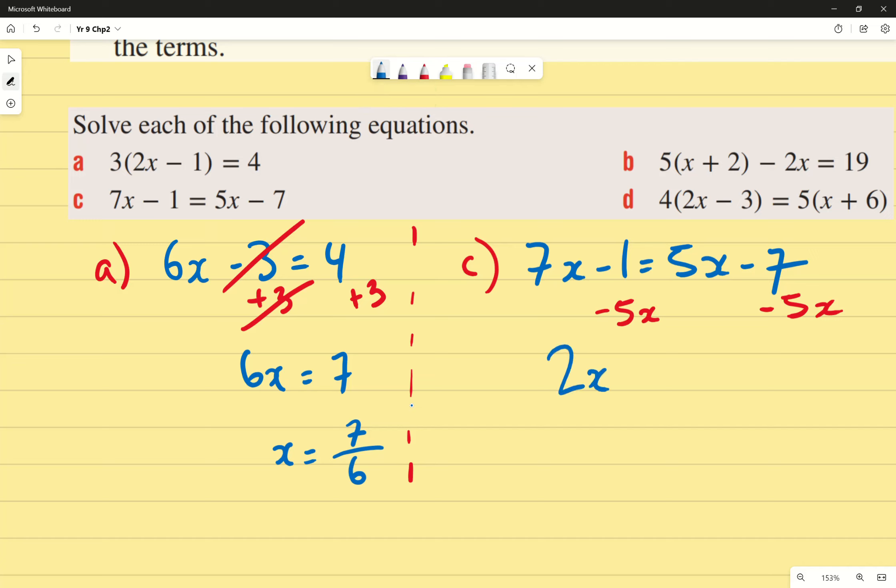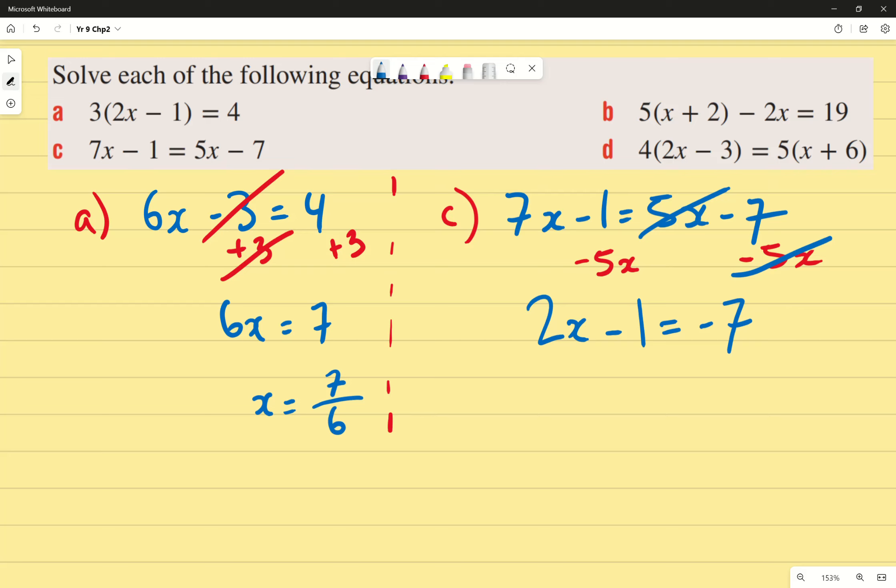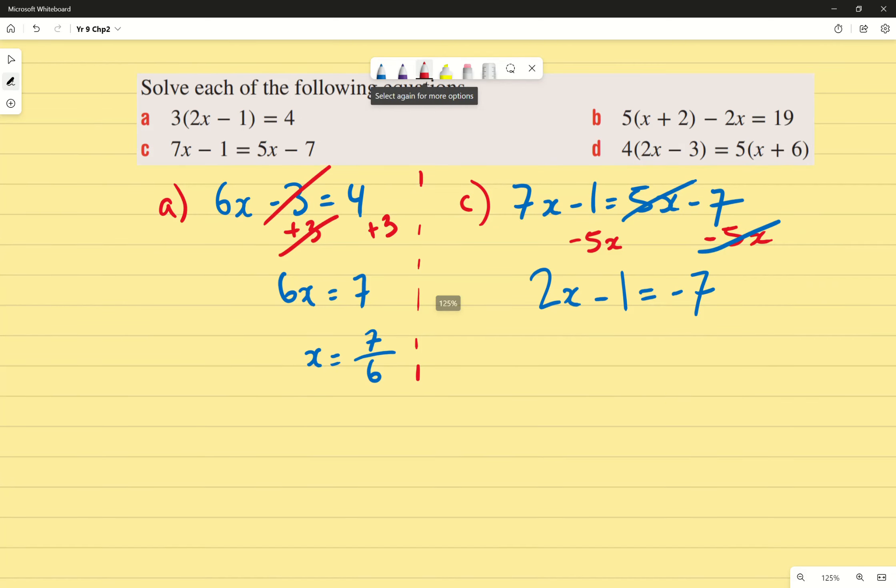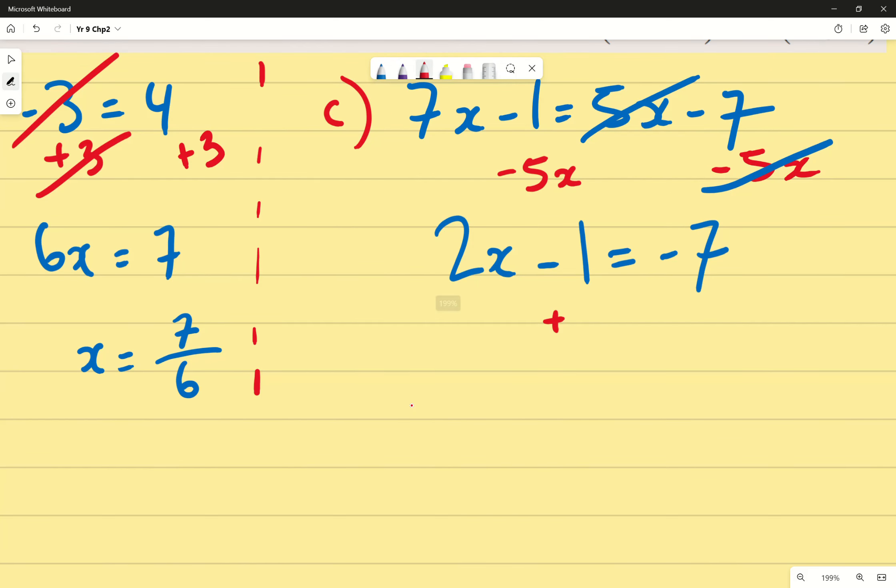And I've still got the minus 1. I'm going to leave that there for now. I have not done anything to it. Which equals, and remember because we subtracted 5x, these two cancel out, don't they? So I'm left with negative 7. Then we do the same thing, except this time I want to get rid of the negative 1. So to get rid of the negative 1, I'm going to plus 1 on both sides.